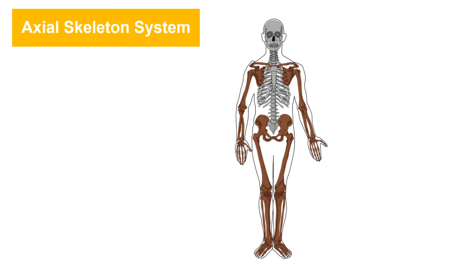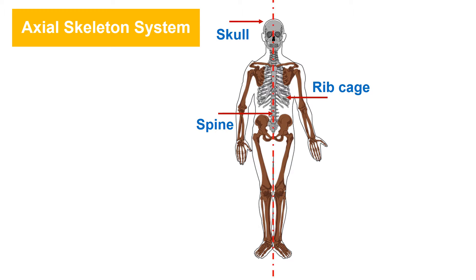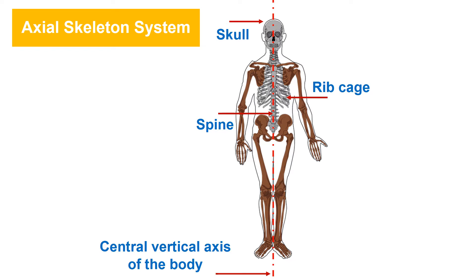The axial skeleton consists of the skull, the spine, and the rib cage. These are situated symmetrically along the central vertical axis of the body. Let's discuss the parts of the axial skeleton system in detail.